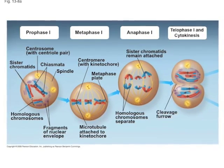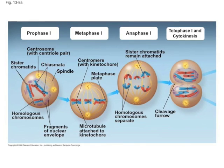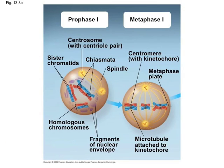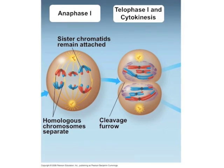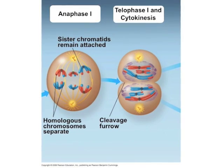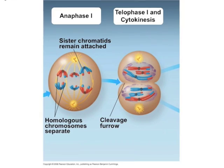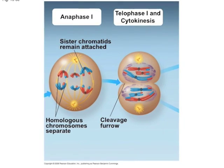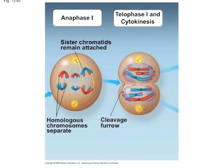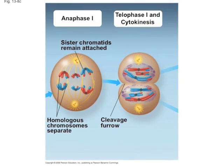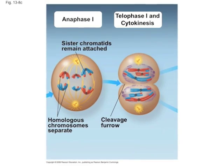After the DNA is copied, in prophase I, tetrads form, which are two homologous chromosomes together. In metaphase I, as the spindle forms, the tetrads line up on the metaphase plate. In anaphase I, the microtubules pull the homologous chromosomes apart but leaving the sister chromatids together, which leaves a haploid number of chromosomes. In telophase I and cytokinesis, the two daughter cells split apart.